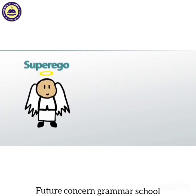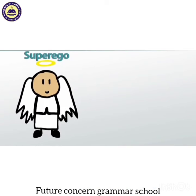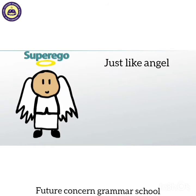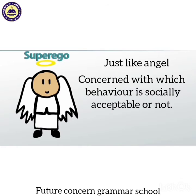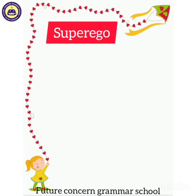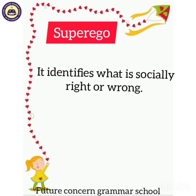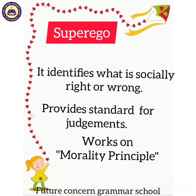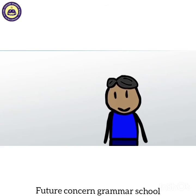Next is the superego — iski misal us angel jaisi hai jo main character ke right shoulder pe tha. Superego hamesha concerned hoti hai keh kaun sa behavior socially acceptable hai. It basically identifies what is socially right or wrong, provides the standards for judgments, aur yeh morality principle par work karti hai.